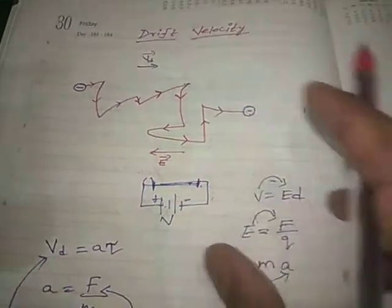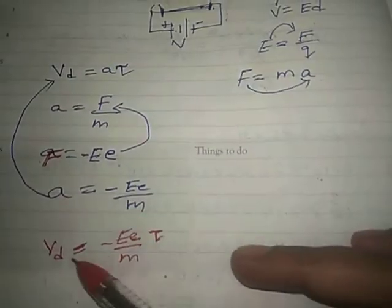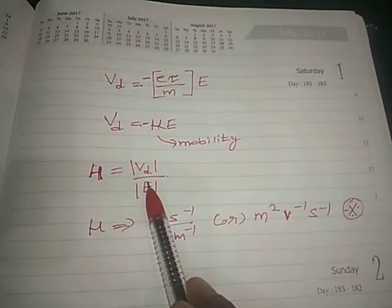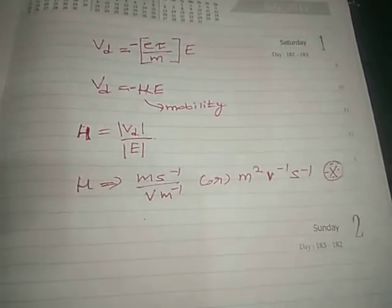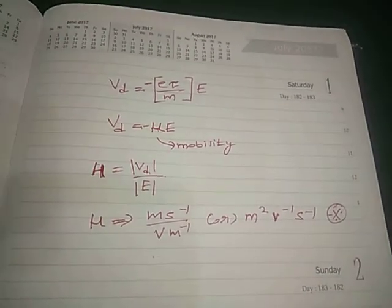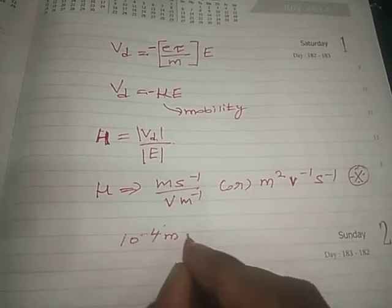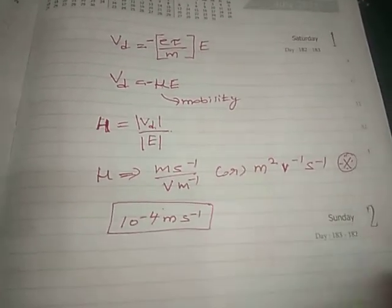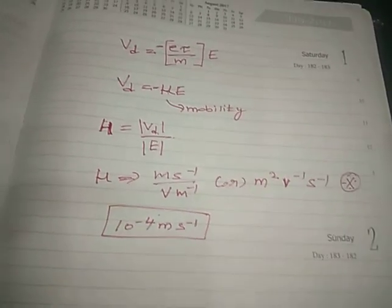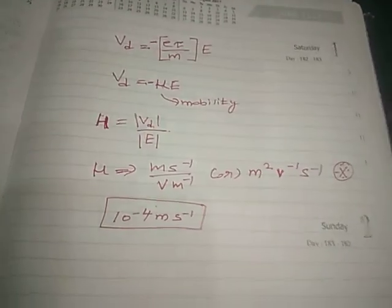The drift velocity is approximately 10 to the power minus 4 meter per second, which is 0.0001 — a very, very minimum velocity. This is the drift velocity of one electron.